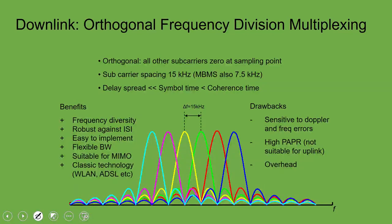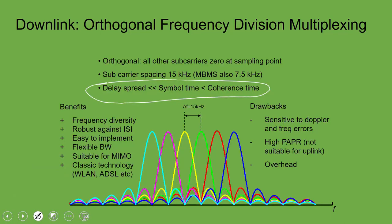An OFDMA signal is based on a set of orthogonal subcarriers. Resources are shared by allocating a subset of subcarriers to each user. They are orthogonal because when sampling one subcarrier at its peak, all other subcarriers have zero amplitude — as shown on screen. To maintain this orthogonality, the symbol time must remain greater than the delay spread and less than the coherence time. We will revisit what symbol time, delay spread, and coherence time mean as we go forward.